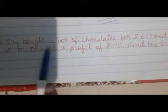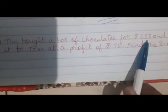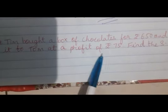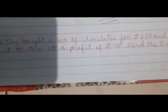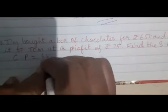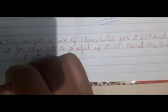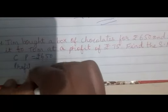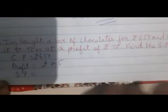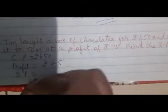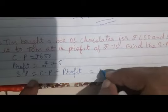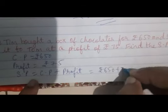Next. Tim brought a box of chocolates for rupees 650 and sold it to Tom at a profit of rupees 75. Find the selling price. The cost price is 650 rupees. Profit is 75 rupees. We have to find the selling price. If cost price is given and we have to find selling price, what do we do? Cost price plus profit. That is 650 plus 75.